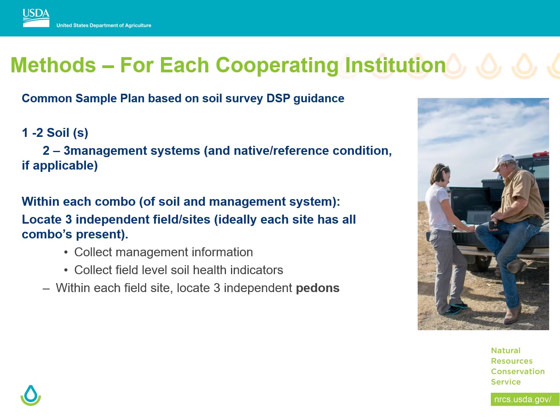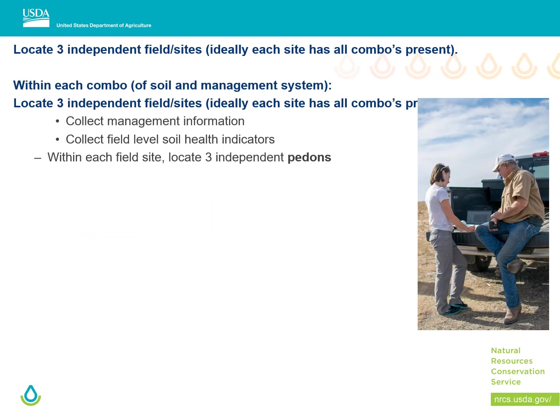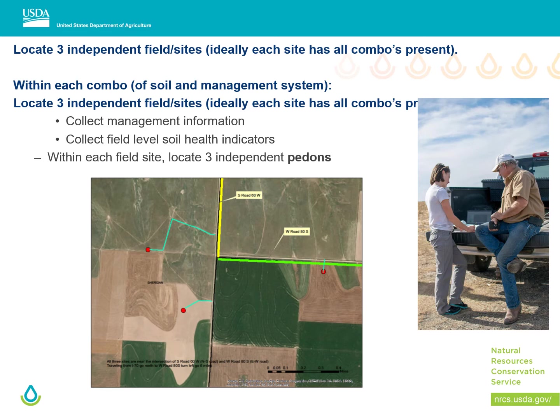There was a common sample plan based on soil survey DSP guidance. Everybody had one or two soils selected with two or three management systems. We wanted a reference condition if we could get it, though that wasn't always available. Within each combination, they found three independent fields or sites. Ideally you'd have all three combinations in one place, but that wasn't always possible. They collected management information, field-level soil health indicators, and pedons and samples — for example, in Kansas with a reference site, rangeland, a conventionally tilled field, and a soil health management system with cover crops, all on the same soil series.